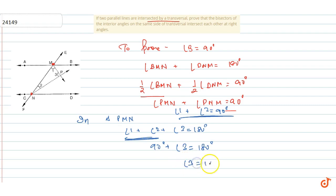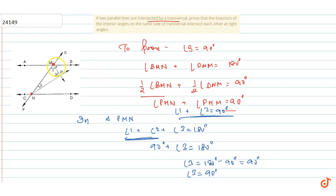Therefore, angle 3 equals 180 degrees minus 90 degrees, which equals 90 degrees. This means the angle bisectors of the interior angles on the same side of the transversal intersect at 90 degrees. This is the answer to the question.